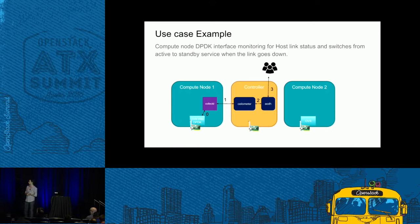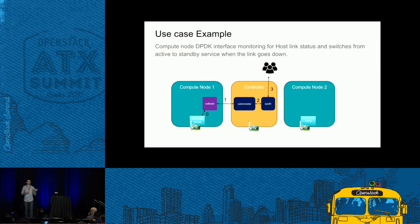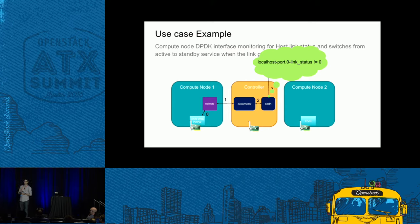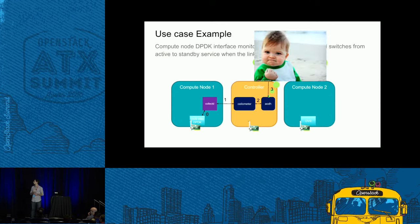In this case we will have the controller node and two compute nodes. We have Ceilometer, CollectD — a monitoring system — and OVS with DPDK. OVS with DPDK will be monitoring the links and reporting to CollectD. CollectD will push all these metrics to Ceilometer. If there is something wrong, we can notify the user through AODH. At first, everything is deployed and running — status is okay.